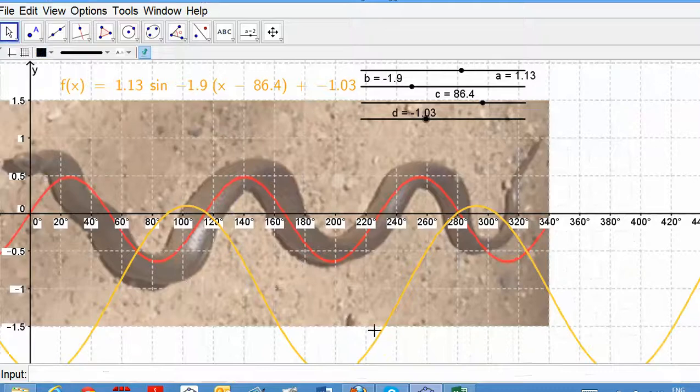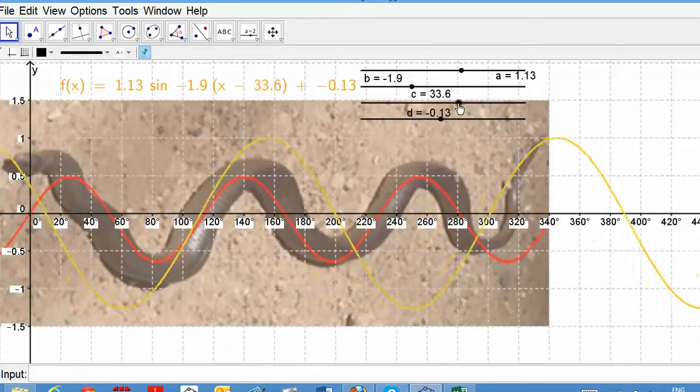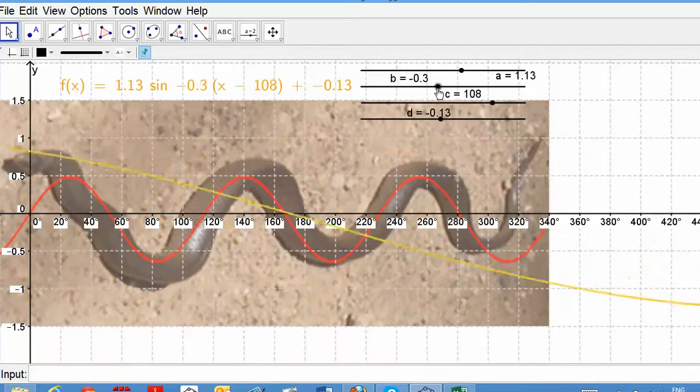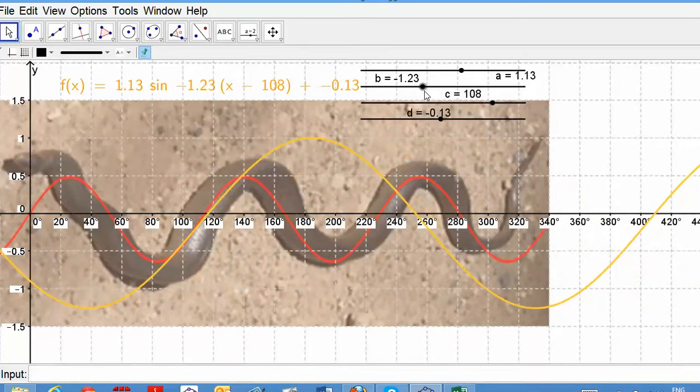And then students can experiment by themselves to see how the coefficients of that sine curve affect the shape of the graph to try and model that onto the snake that's hiding below. So technology allows them to experiment, to discover, to explore the mathematics for themselves.